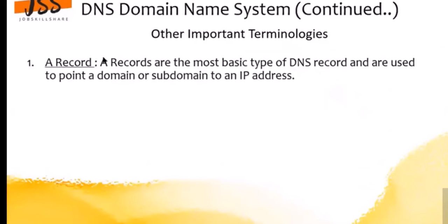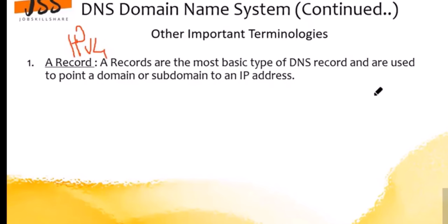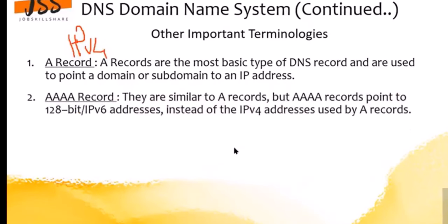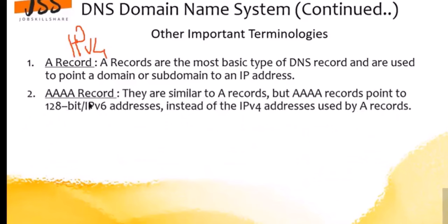When it comes to DNS, there are some important record types. The A record is simply your IPv4 information. Then we have the AAAA record — the quad-A record — which is for IPv6. Wherever you see quad-A, that's IPv6.